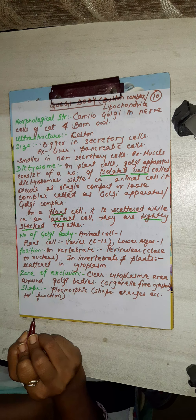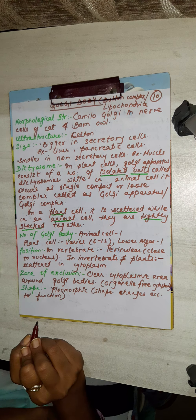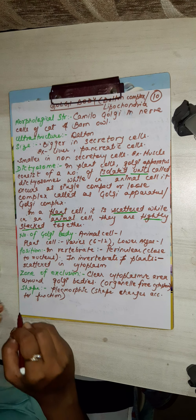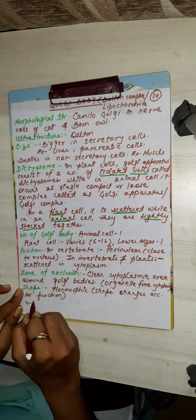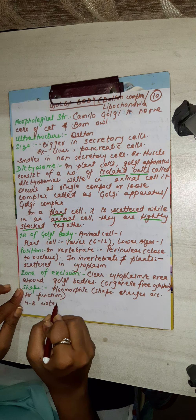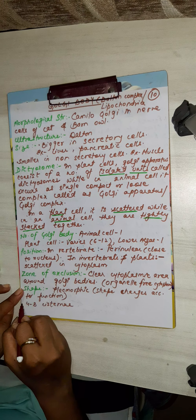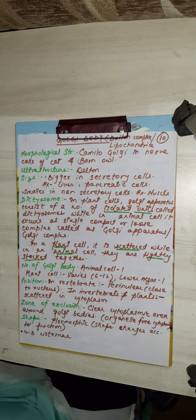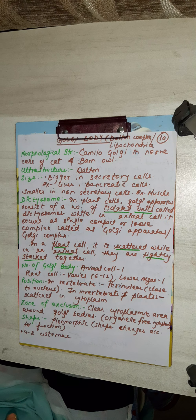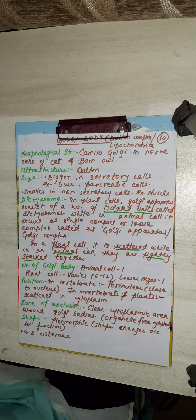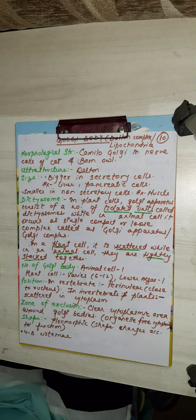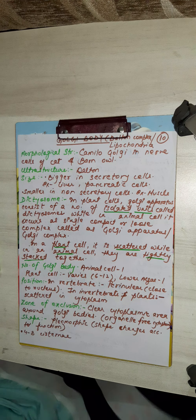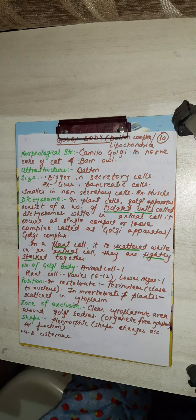There are a total of 4 to 8 cisternae. Dictyosomes can be described as flat, membrane-bound cavities where proteins are stored, modified, and packed into vesicles for further transport.